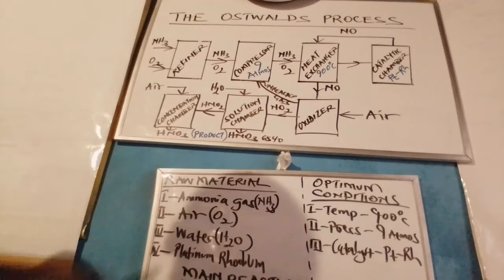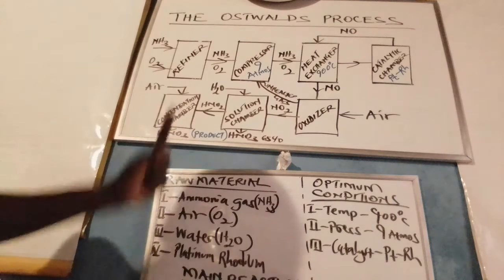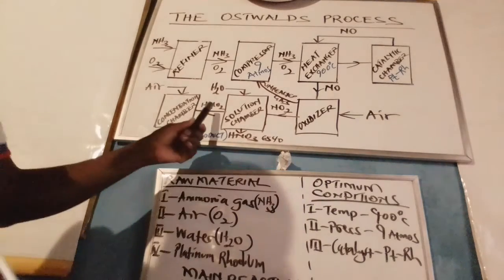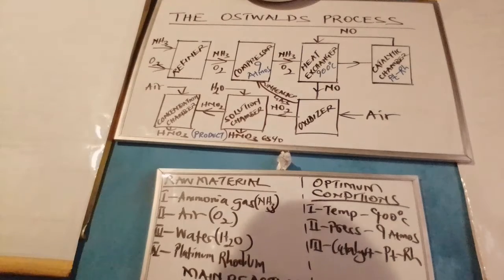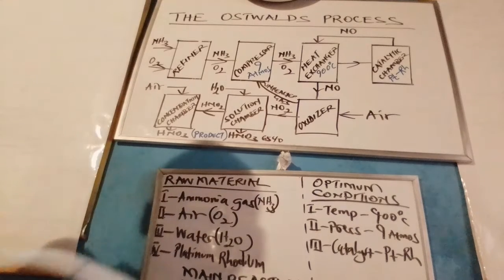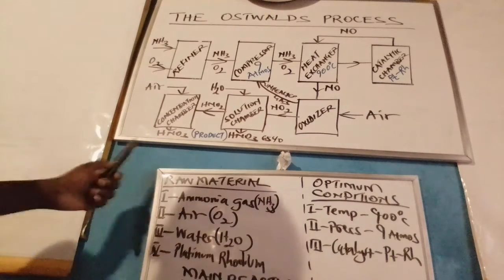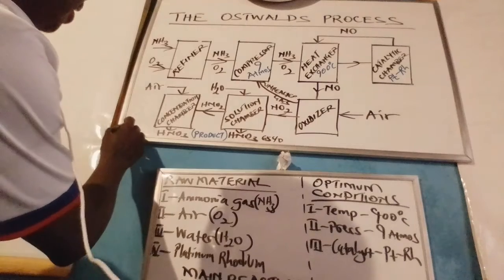We then proceed to dissolve the nitrogen dioxide gas in water in the solution chamber. When this happens, it forms roughly 65% nitric acid, the required product. The remnant is nitric acid of lower oxidation state. This has to be concentrated by passing it through excess air to undergo oxidation, forming the subsidiary nitric acid. Once concentrated, we obtain 100% nitric acid.